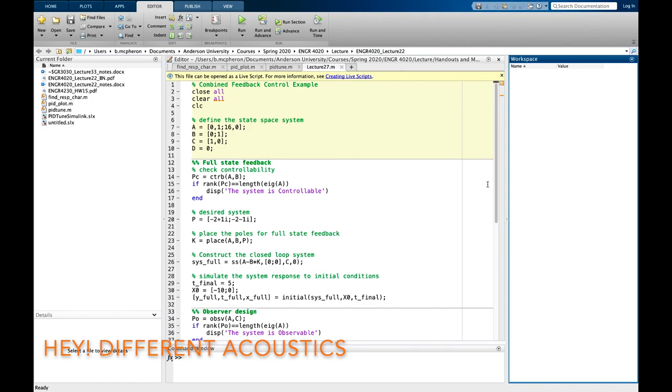All right. So this is the MATLAB portion of this lecture. And what I want to do is kind of talk through the code. And then what I'll do is I'll also put a link to this in the description of the video. So the first thing I do in this code is I close all of my windows, clear all of the variables, and I clear the command window. And then I also will define the state space system, A, B, C, and D.